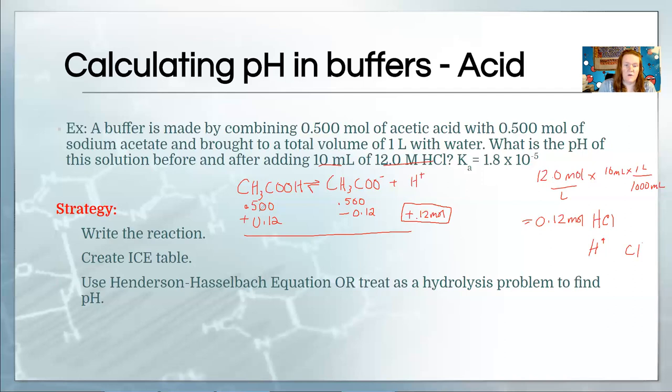So if we reacted this much acetate, we are going to produce an equal amount of acetic. So at equilibrium, it's just 0.5 plus 0.12 moles. And over here, it's 0.5 minus 0.12. And then we're just going to plug it right back into that Henderson-Hasselbalch equation. The pKa is the same. The main source of mistakes here is not putting the acetate on top. So you want to make sure that the conjugate is always on top.